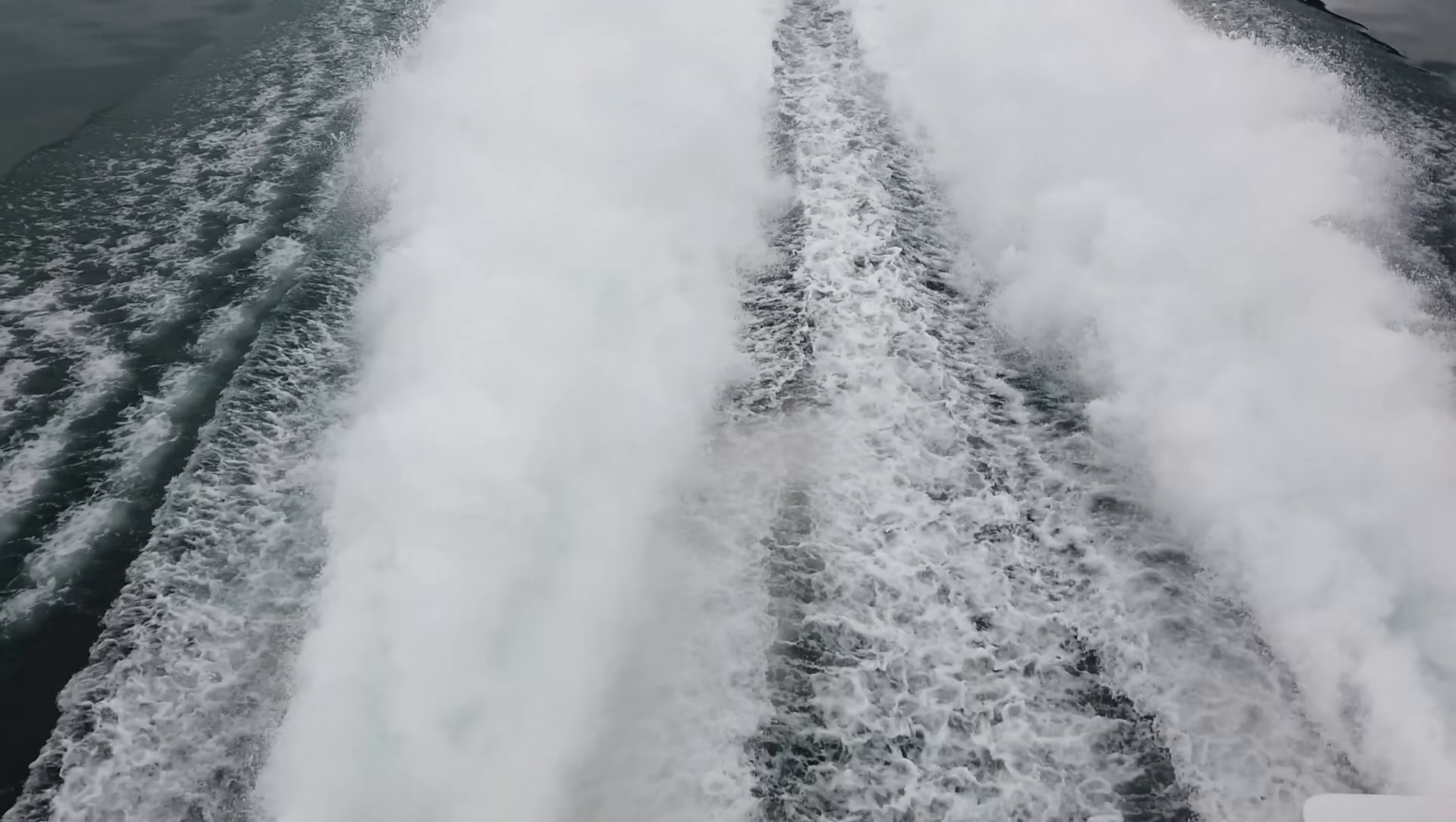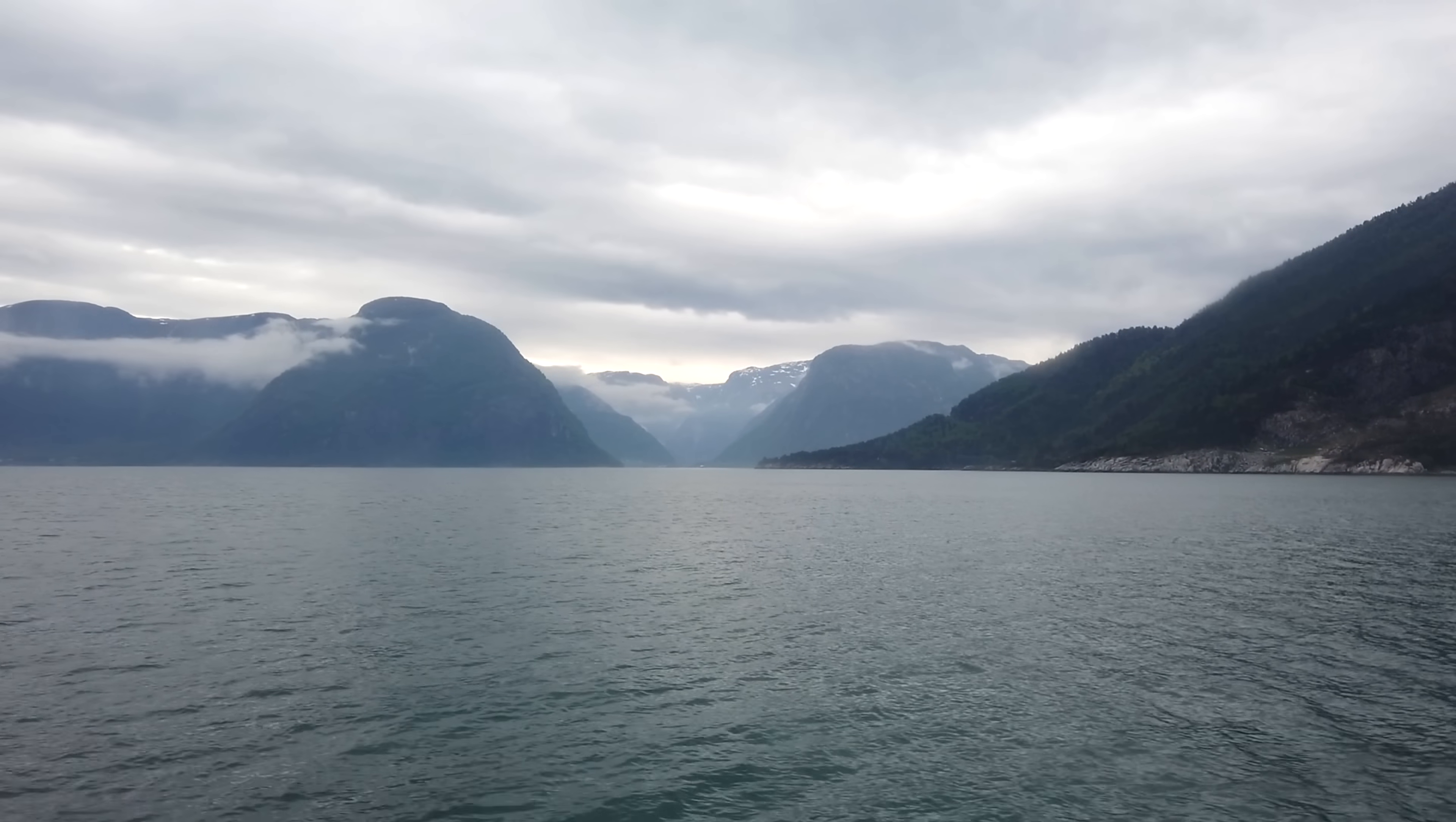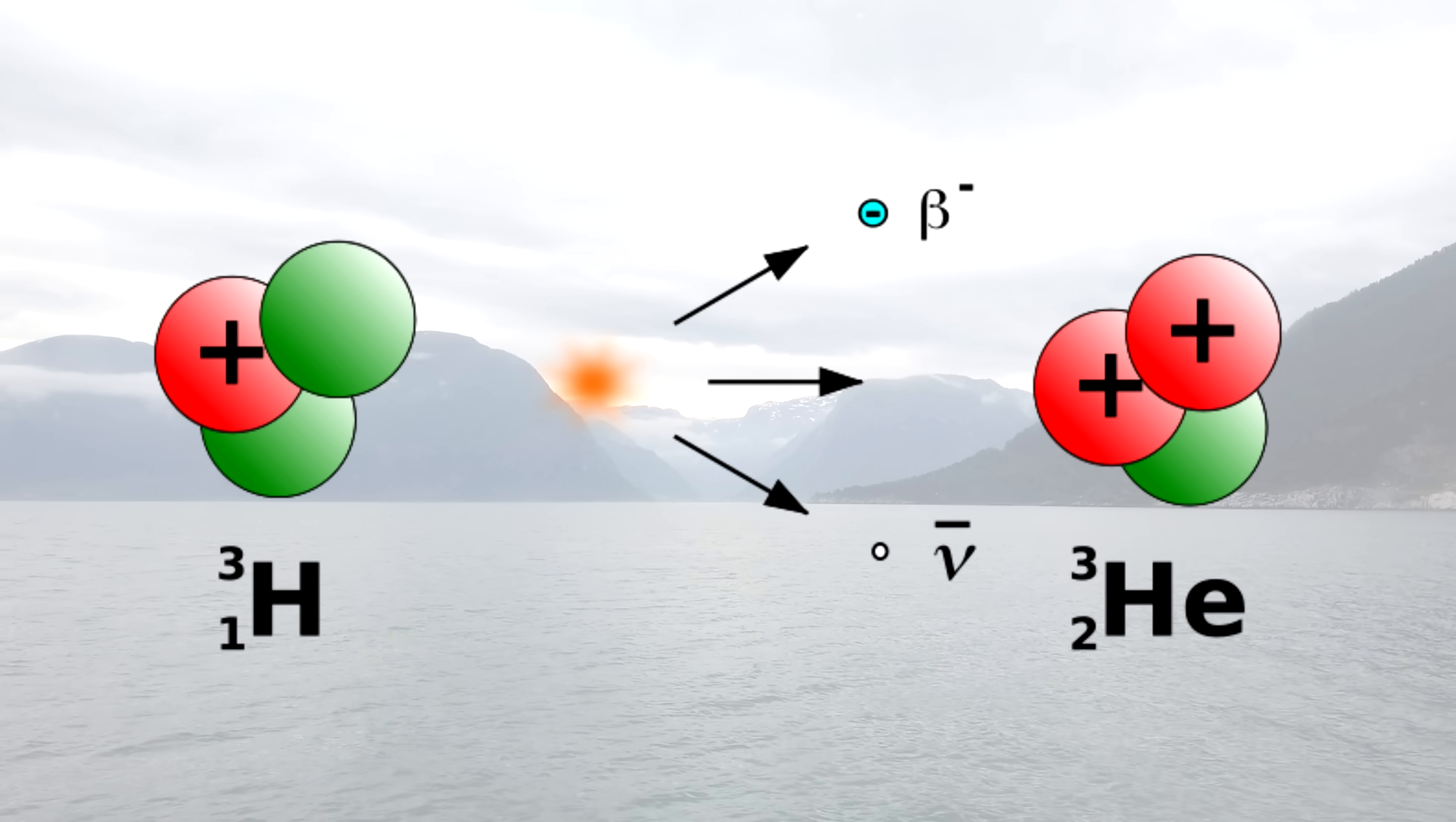Tritium or as it is also known as ultra-heavy hydrogen is an unstable isotope and that is why its concentration in water is negligibly small. It decays into helium-3, releasing an electron and antineutrino.